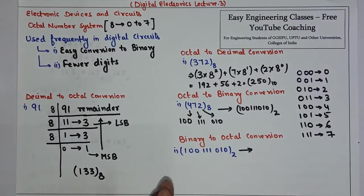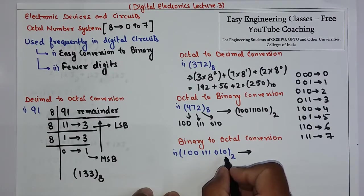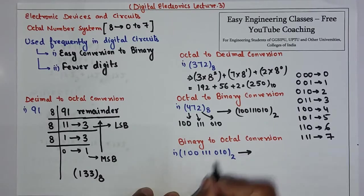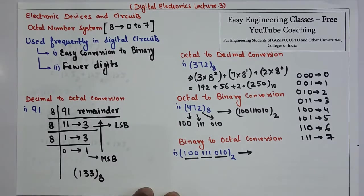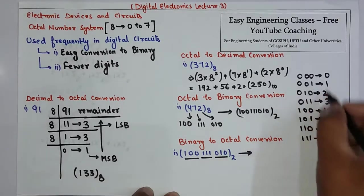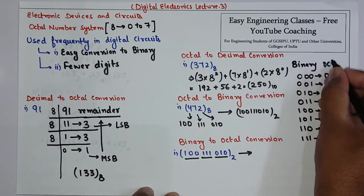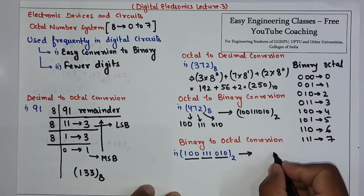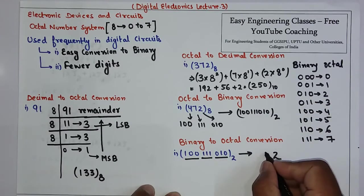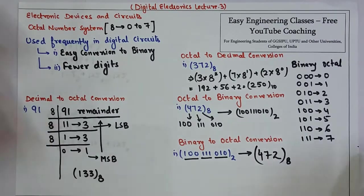For binary to octal conversion, group the binary digits into sets of three bits starting from the least significant bit. Each group of three bits gives one octal digit. For example: 0 1 0 is 2, 1 1 1 is 7, and 1 0 0 is 4 — so the octal result is 4, 7, and 2.